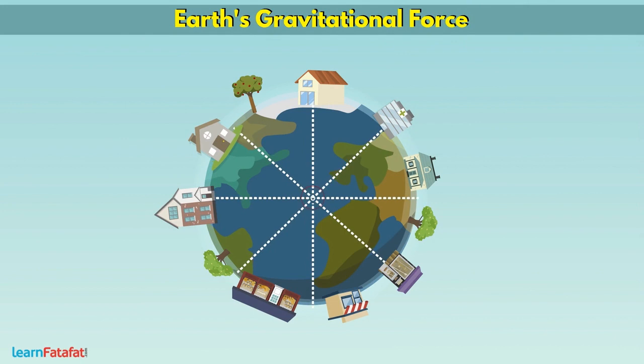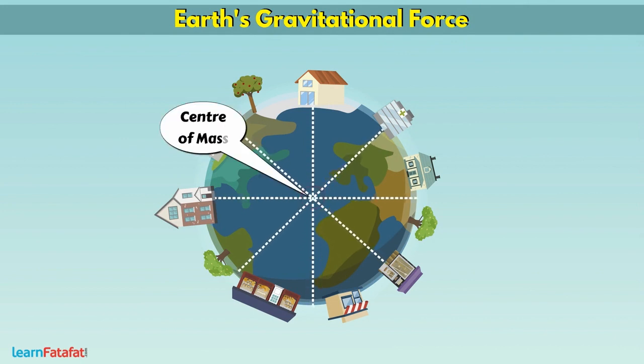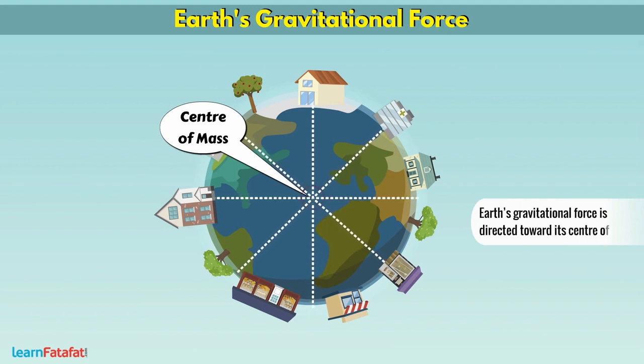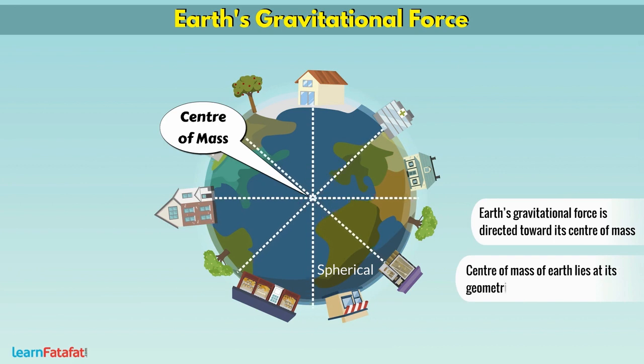Since the gravitational force is directed towards the center of mass of the object, Earth's gravitational force is directed towards its center of mass. Since Earth is assumed to be spherical, the center of mass of Earth lies at its geometrical center.